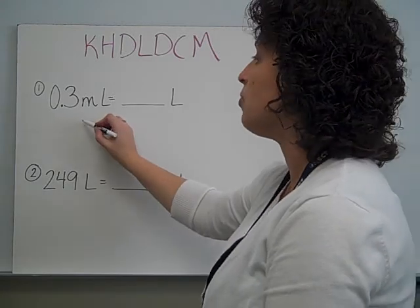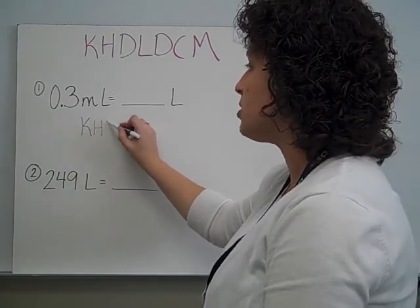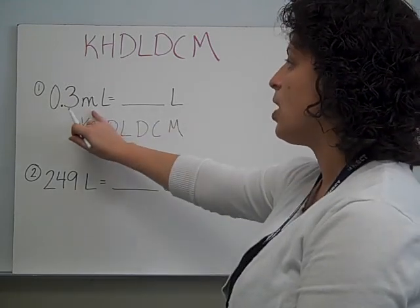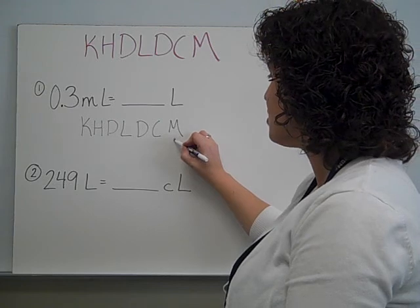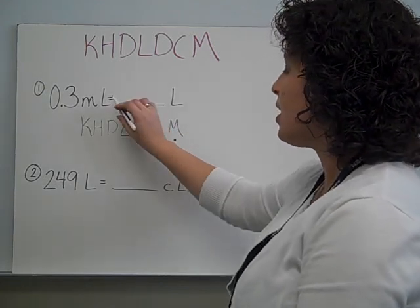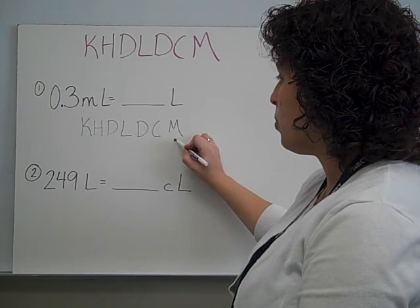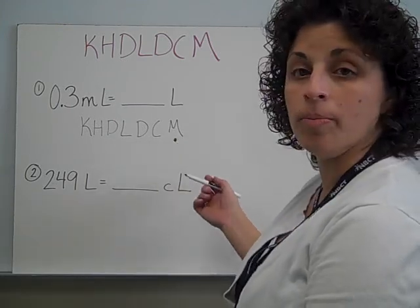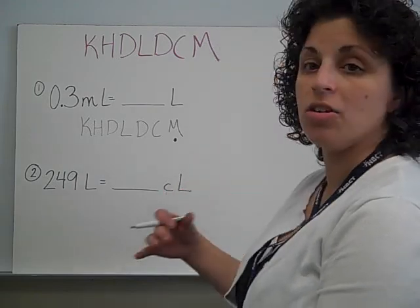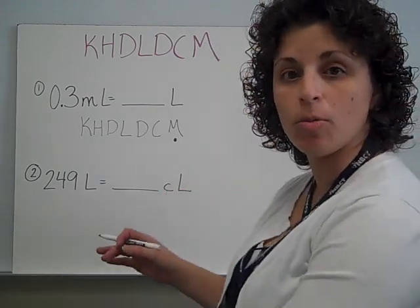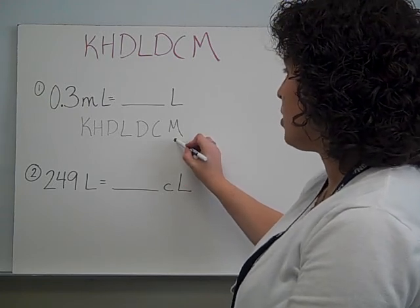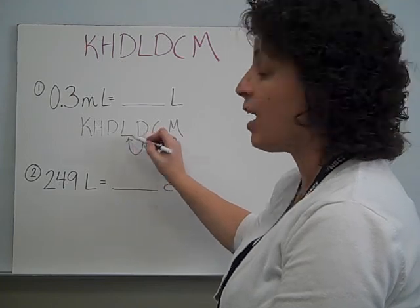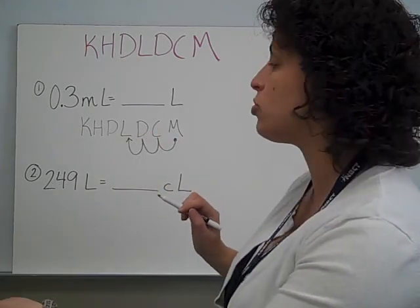I'm going to say my phrase and write the letters: King Henry's daughter loves delicious chocolate milk. Milliliters is the smallest unit, that's the M right here, and I need to change to liters. So I put the point there for my decimal. Remember, the metric system is based on groups of ten, just like our number system, so we're able to use this decimal pattern to help us solve. Here I am at milliliters, and I need to get to liters — that's one, two, three moves.